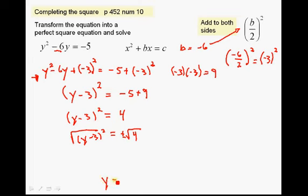We're trying to undo everything with the y and get the y isolated by itself. And so we have to undo the square. We have to undo the exponent. How do you undo it? You take the square root. Okay? So now we're going to be left with y minus 3 equals plus or minus the square root of 4, which is just 2.